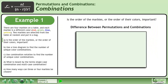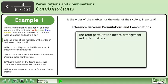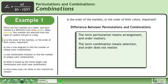Let's take a moment to discuss the difference between permutations and combinations. The term permutation means arrangement, and order matters. The term combination means selection, and order does not matter.